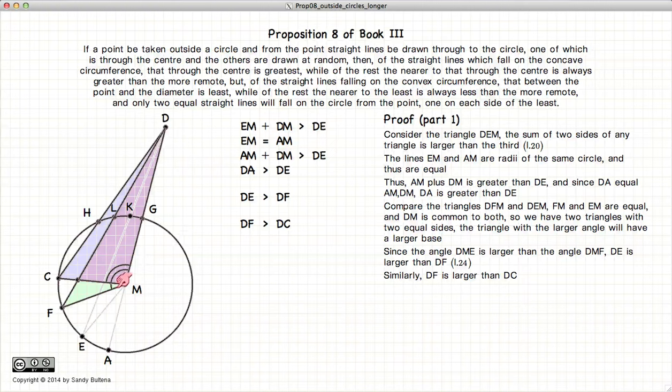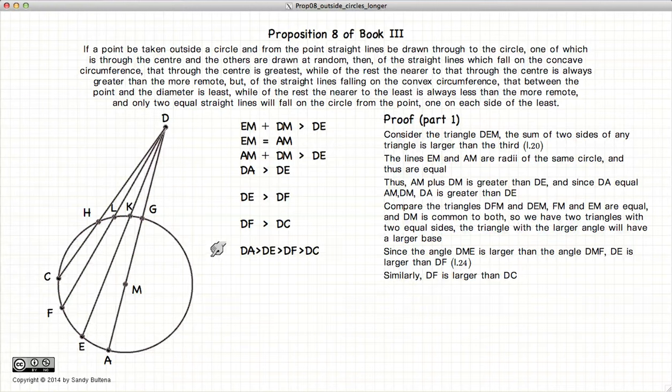Using the same logic, we have FM equals CM. MD is shared between both triangles. So the triangle with the larger angle, in this case the green triangle, will have the larger base. So FD will be larger than CD. So there we have demonstrated the first part of this proposition, that DA is greater than DE, greater than DF, greater than DC.